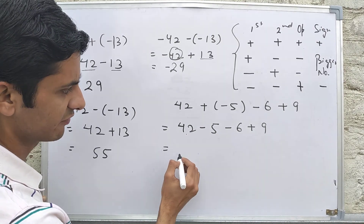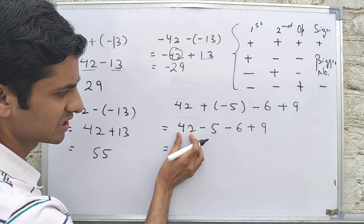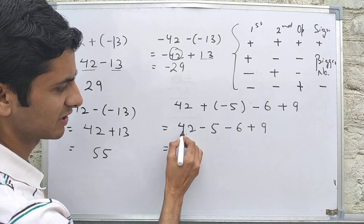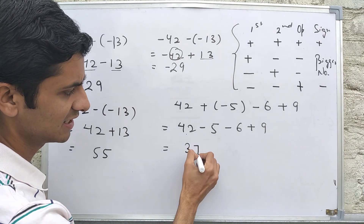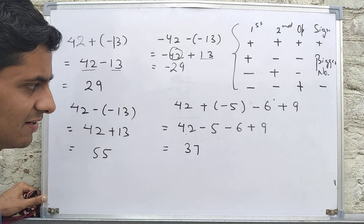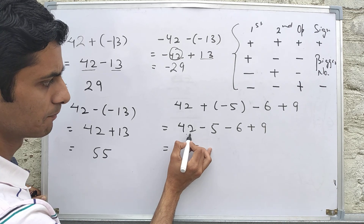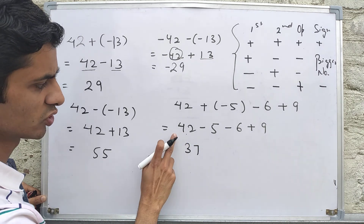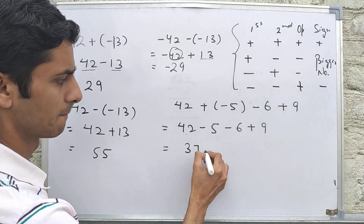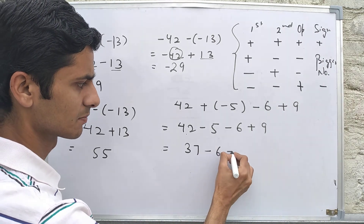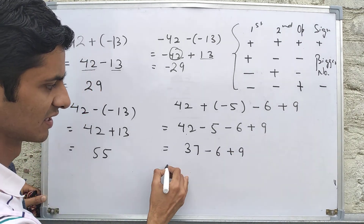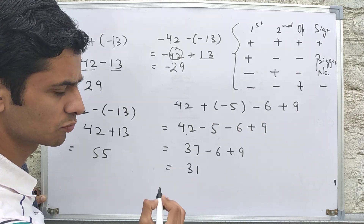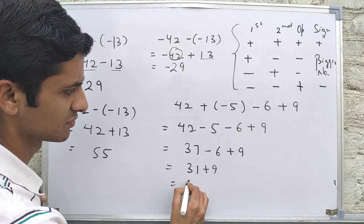42 - 5: one number is positive, one is negative — we subtract. The bigger number is 42, so the result is +37. Then 37 - 6: simple subtraction gives 31. Then 31 + 9 = 40. That is the answer by going step by step from left to right.